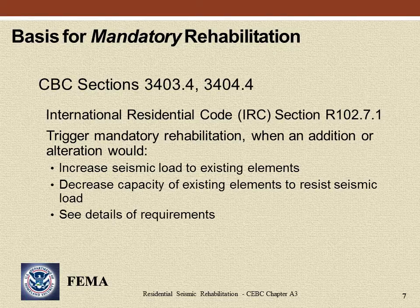The CBC and CRC include provisions that might trigger mandatory seismic rehabilitation measures. These measures can be triggered by: (1) an increase in loading to existing elements, such as added weight from a roof or wall finish or supported area, or (2) a decrease in capacity of existing elements, such as increased openings for doors or windows that lead to reduced bracing wall length. When mandatory measures are triggered, it is important to discuss the extent of rehabilitation required with the local building department.